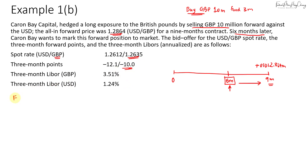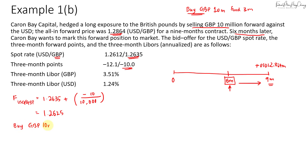When buying pounds, since pound is the base currency, we buy at the higher price — 1.2635 — using the forward points on the offer side. So the forward rate for dollar-to-pound that we can buy at equals 1.2635 plus negative 10 over 10,000, which gives us 1.2625. In three months we will buy 10 million pounds, and we'll have to sell an equivalent amount: 10 million multiplied by 1.2625 = USD 12.625 million.